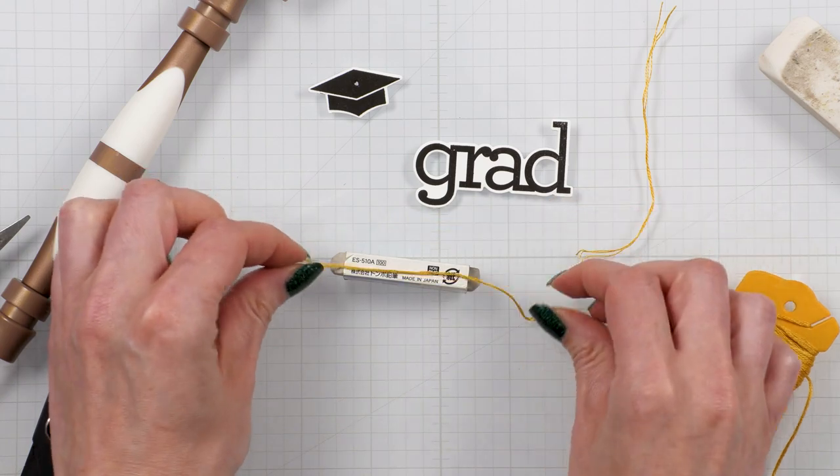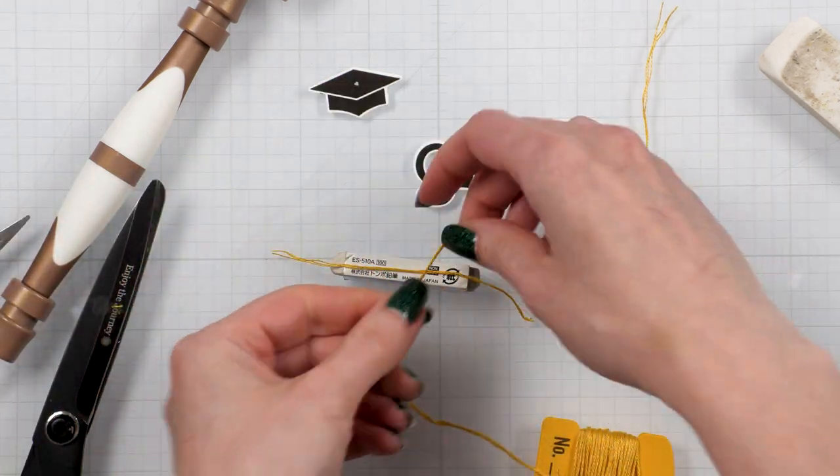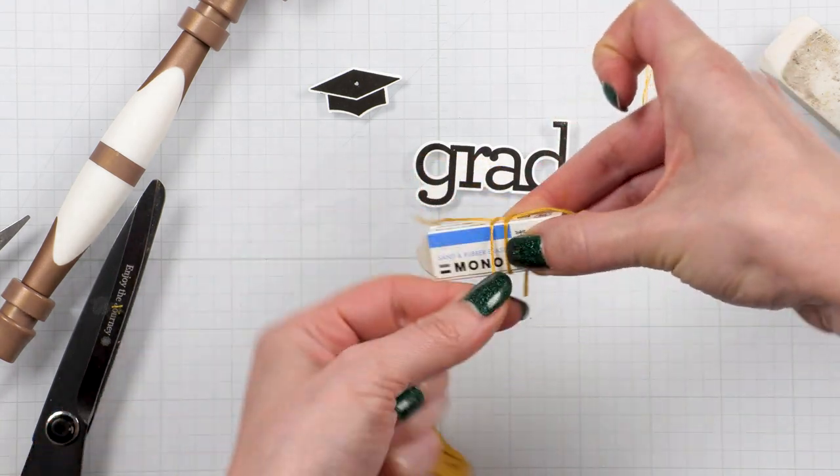Now I place one piece onto my guide, the pencil eraser, and then I wrap the thread twice around the pencil eraser like so.